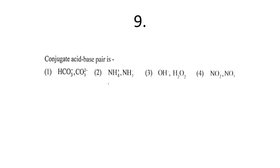The ninth question: identify the conjugate acid-base pair. A conjugate acid-base pair differs by only one H⁺. Looking at the options: CO₃⁻ and CO₃²⁻ differ by one H⁺, making them a conjugate acid-base pair. The other options do not satisfy this condition. So the first option is correct.